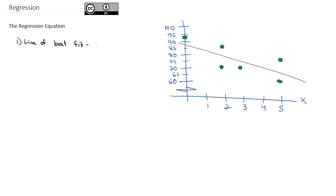It's the closest possible line to all the points on the scatter plot.